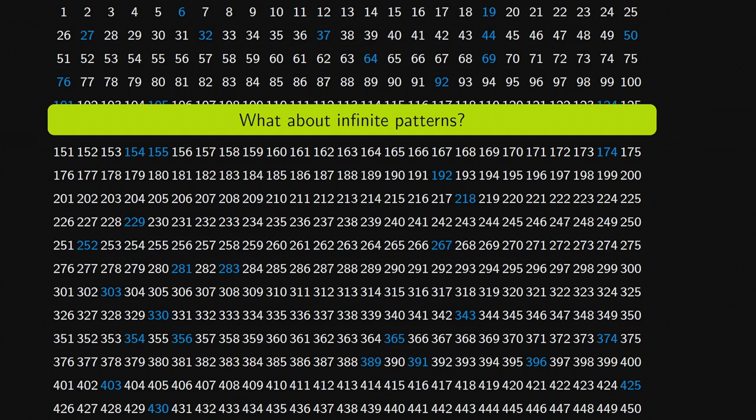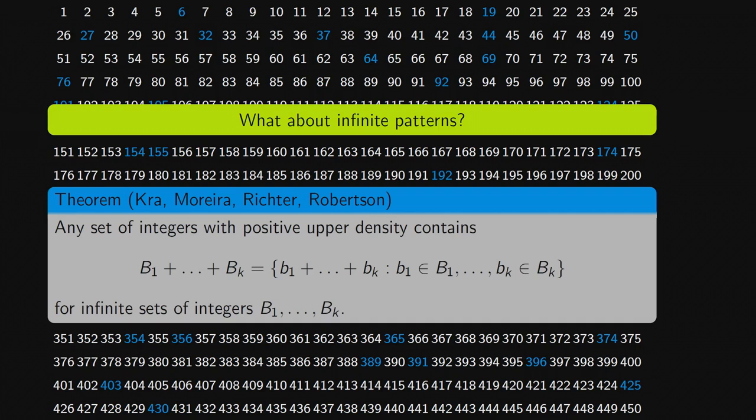So let me state precisely, and this is the theorem that just jointly with my collaborators, Joelle Moreira, Florian Richter, and Donald Robertson, and this is a theorem from, well, 2022, which says the following, you take a set of integers with positive upper density, so again, think of it as 10%, maybe, but it could be 0.1%, it doesn't matter, that there are infinite sets of integers, B1, B2, up to Bk, such that when you start summing, and you pick one b1 from B1, and b2 from B2, and bk from Bk, and you take all of those sums, that all of these sums are contained in my original set. And that's an infinite bunch of sums that are in there.